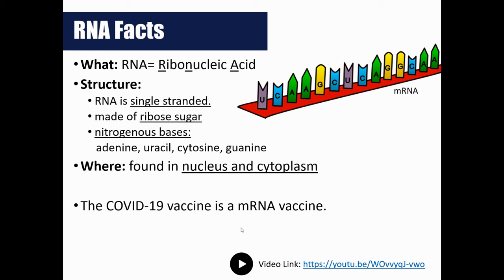DNA and RNA also differ by the number of strands. DNA has two strands, while RNA is single-stranded — just one strand. There are four nitrogenous base options in RNA, and three are the same as in DNA: adenine, cytosine, and guanine. What differs is that we do not have thymine in RNA — thymine is replaced with uracil. So RNA has adenine, uracil, cytosine, and guanine. You can use letter abbreviations: A, U, C, G.